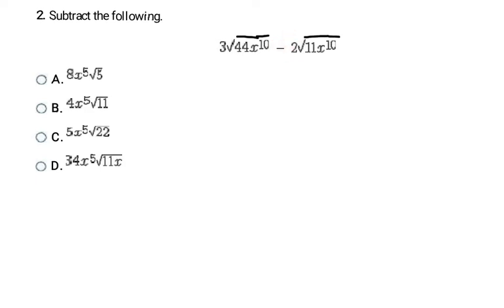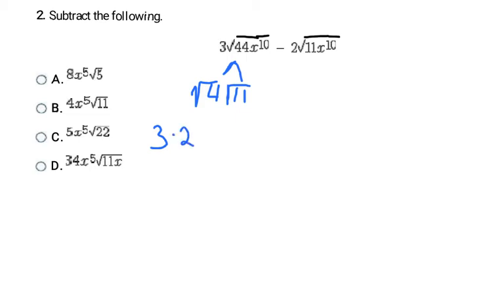In the next problem we're subtracting radicals with variables. We have √(44x¹⁰) and √(11x¹⁰). The x parts match but the number parts don't — 44 and 11 are different — so we can't automatically take 3 minus 2. We have to simplify first. The largest perfect square dividing into 44 is 4, since 4 times 11 equals 44. So √44 becomes √4 · √11, giving us 2√11, and with the 3 out front that's 3 times 2, leaving us with 6 and √11 so far.